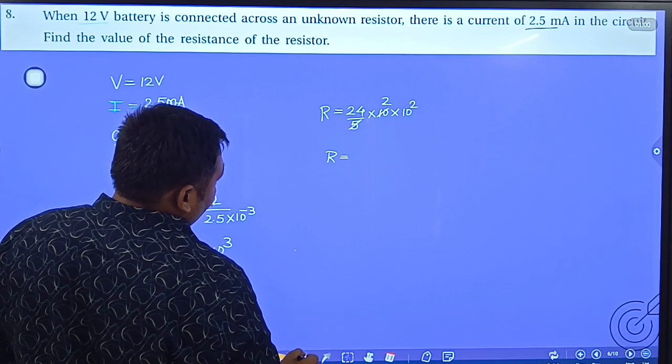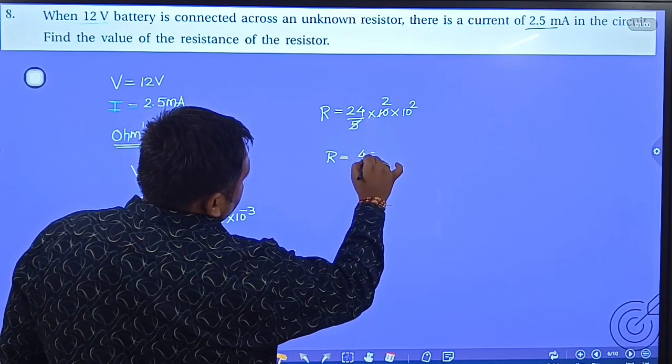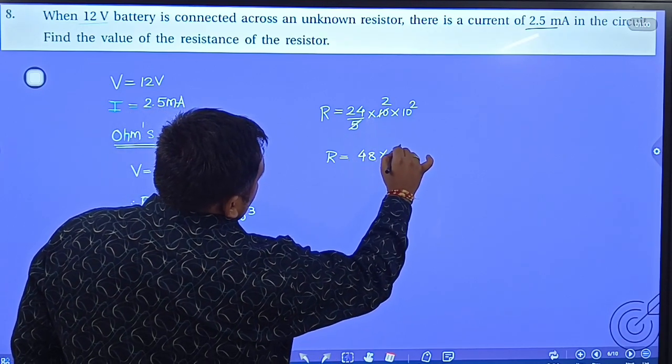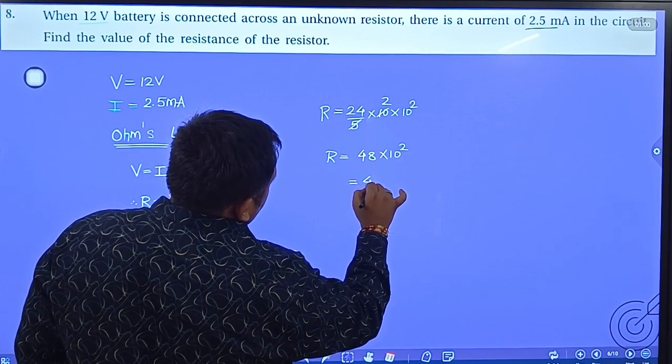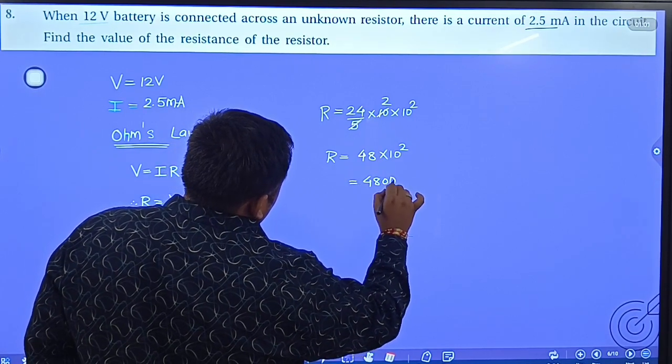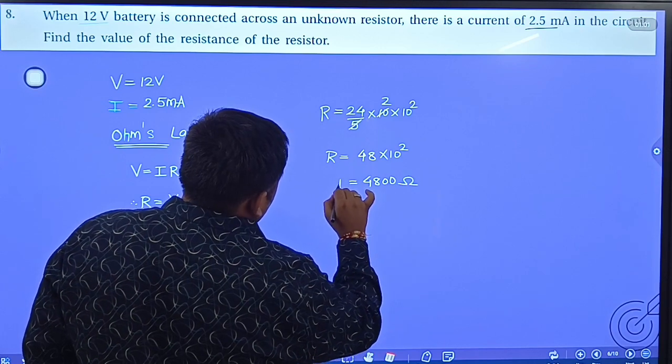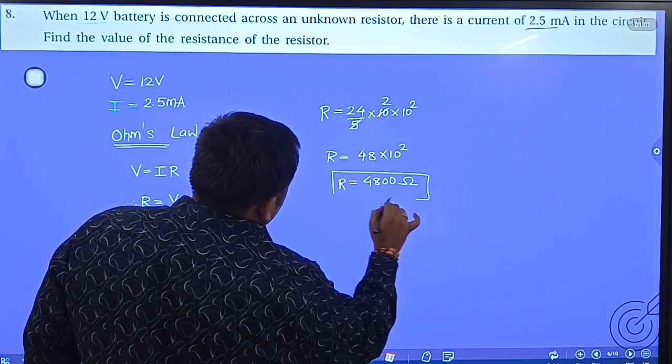24 into 2, meaning 48 into 10 to the power 2, which is 4800 ohm. This will be your resistance.